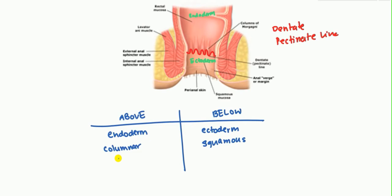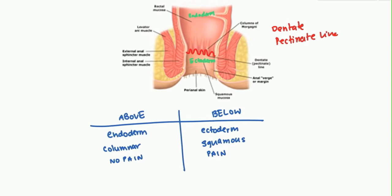Since above the pectinate line is derived from the endoderm, there is no somatic sensation — there is no pain above the pectinate line. However, below the pectinate line, this is essentially your skin, which has somatic sensation, so you will feel pain. The nerve primarily involved in sensing this pain is the pudendal nerve.